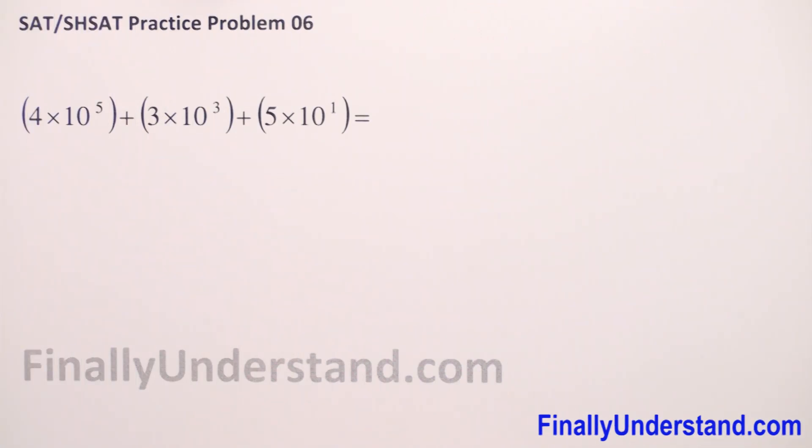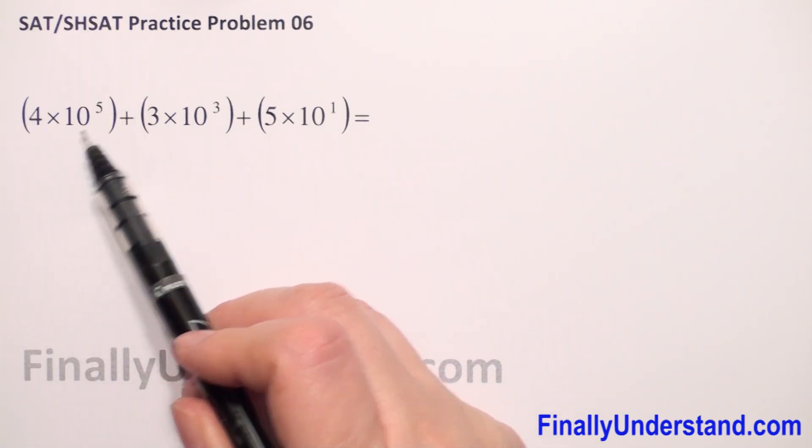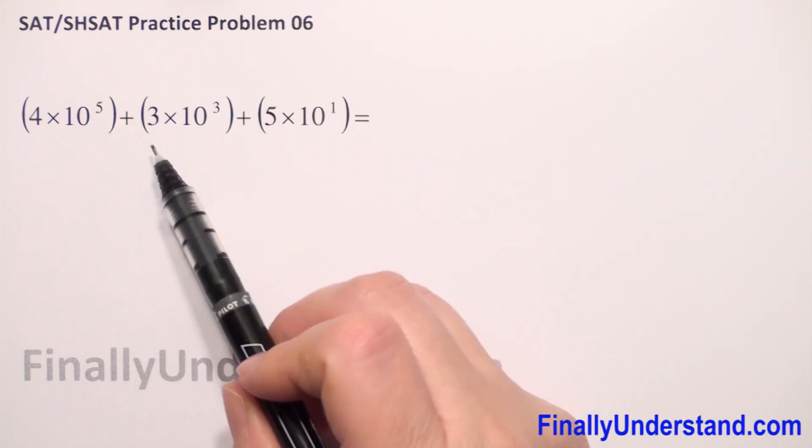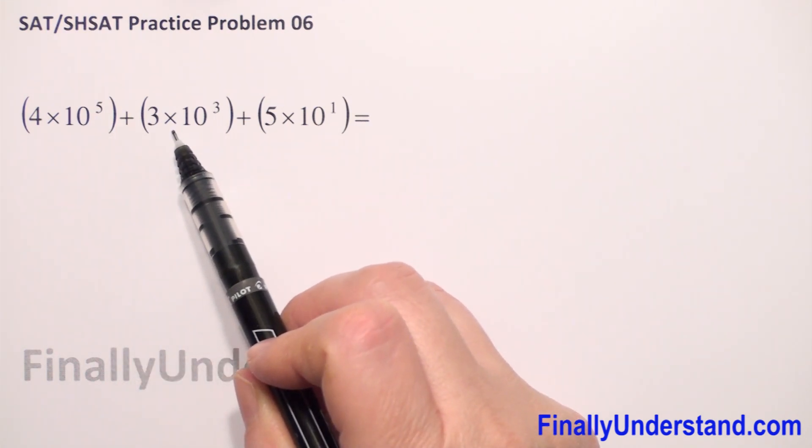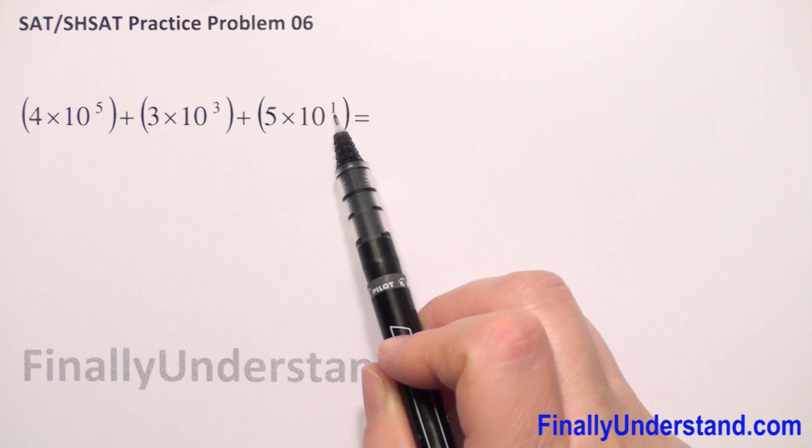We have to find the value of this expression. What we have here: 4 in the first parenthesis, 4 times 10 to the 5th power, next, plus 3 times 10 to the 3rd power and 5 times 10 to the 1st power.